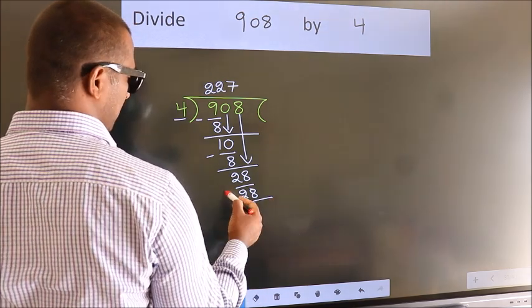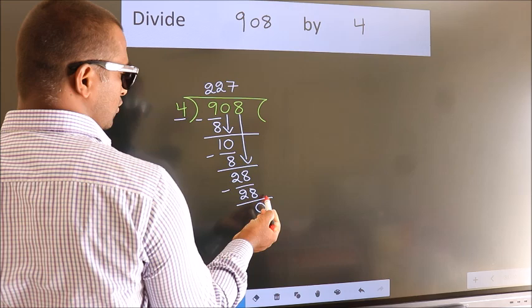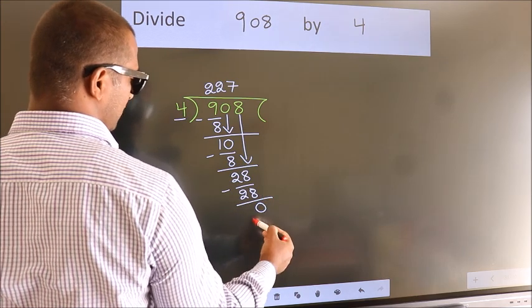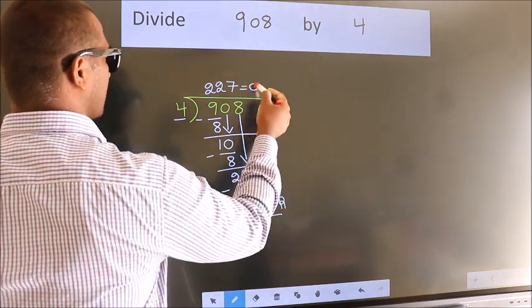Now, we subtract. We get 0. No more numbers to bring it down. So, we stop here. This is our remainder. This is our quotient.